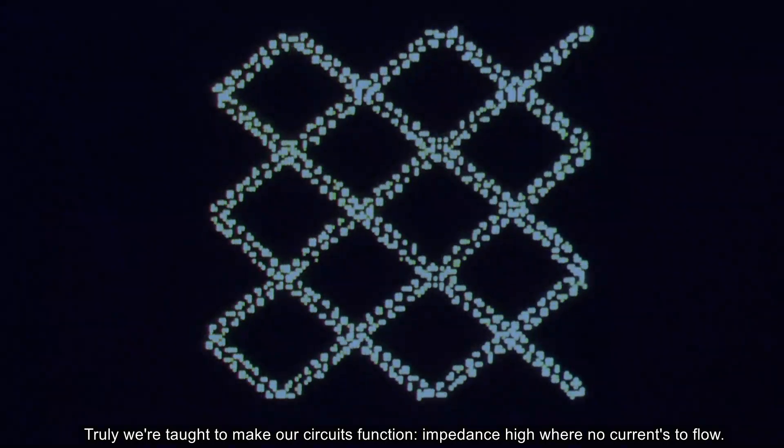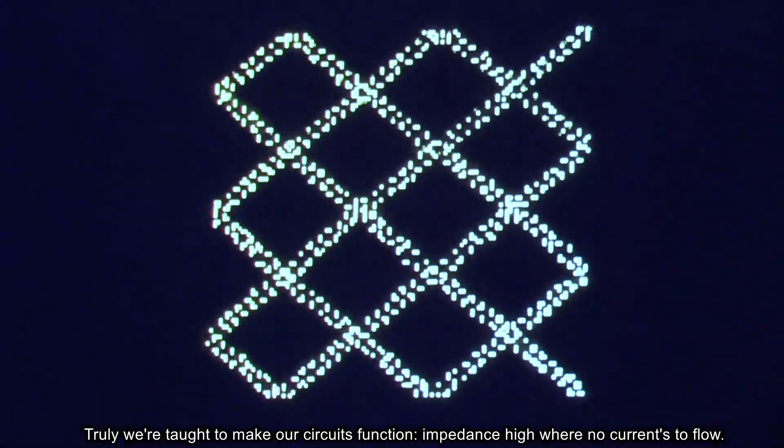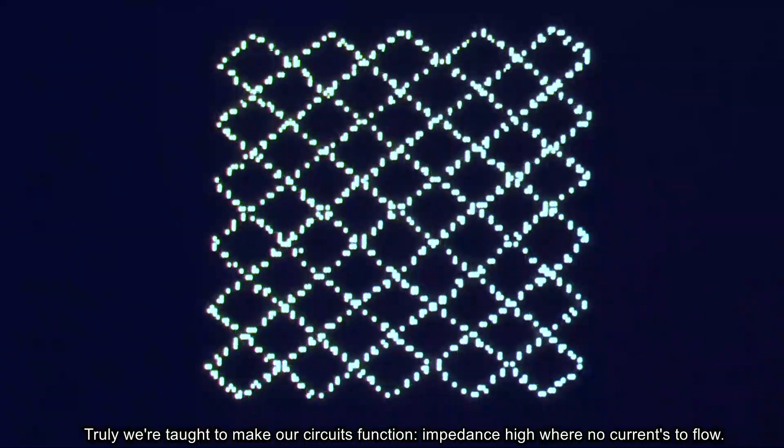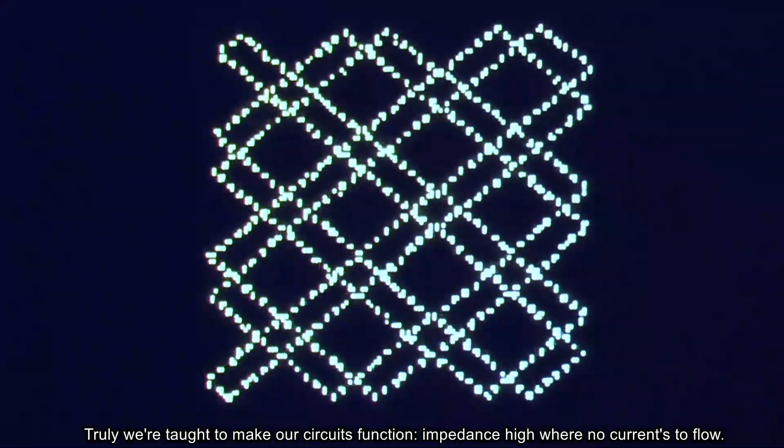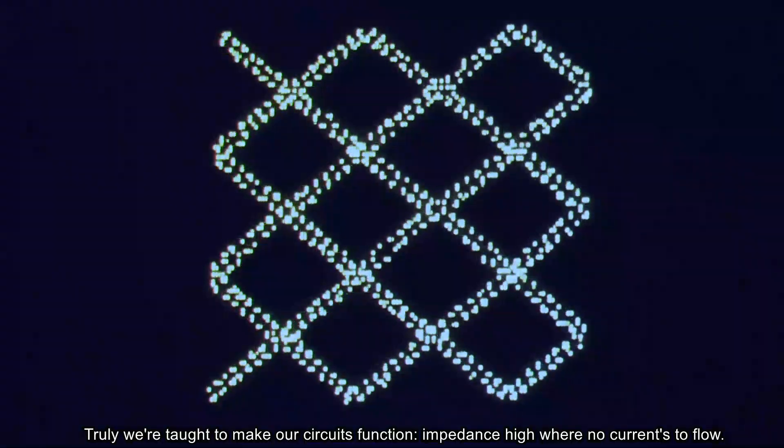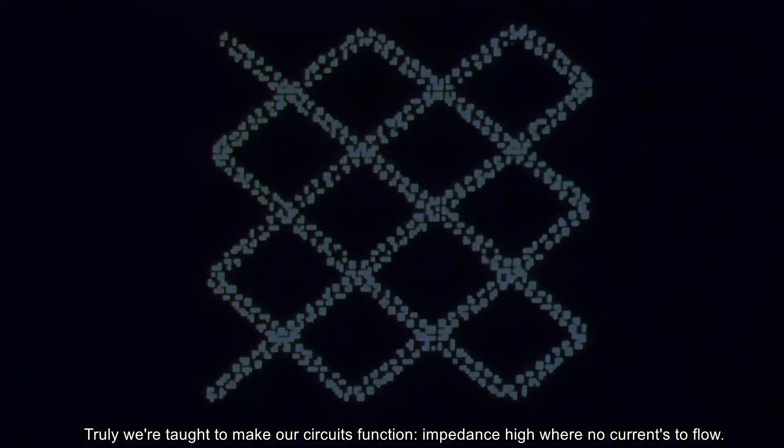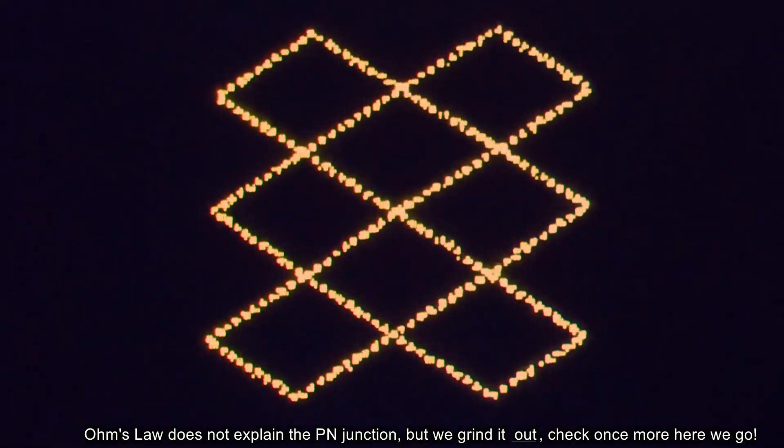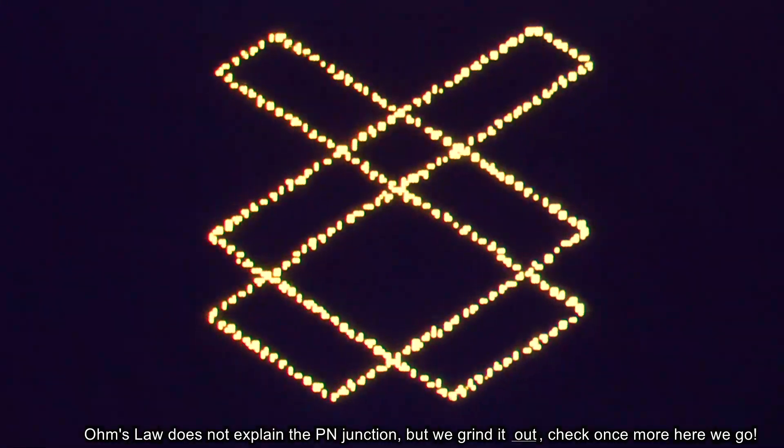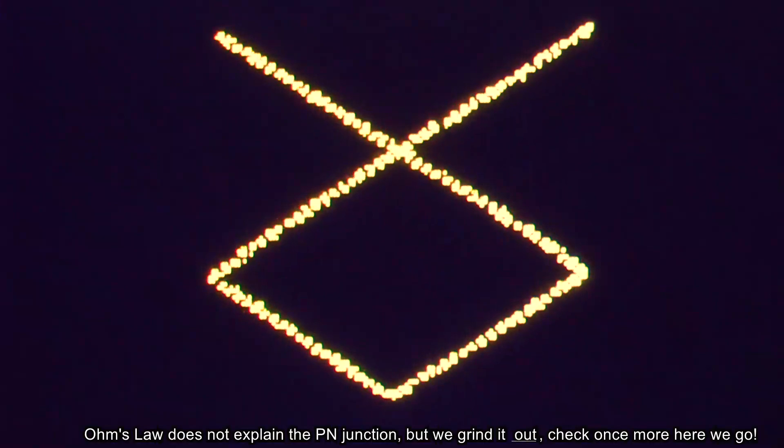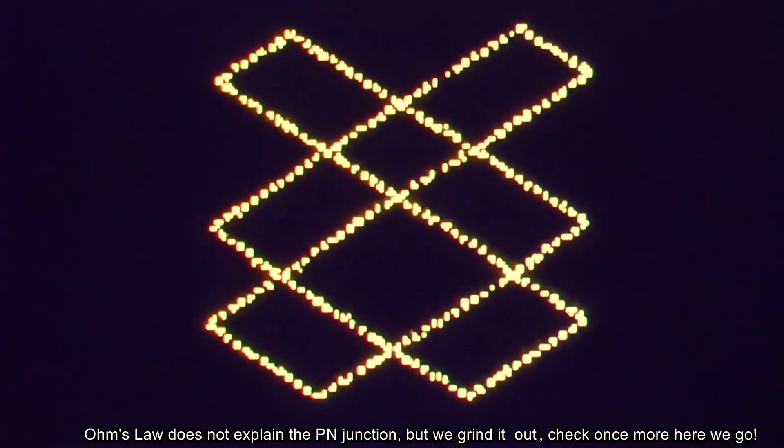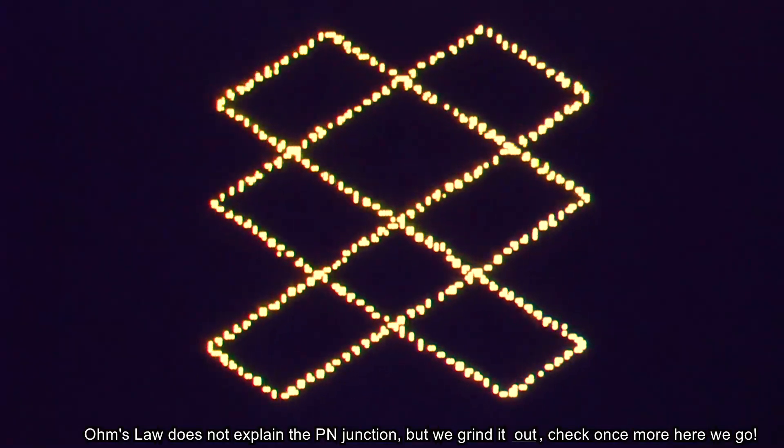Truly we're taught to make our circuits function, impedance high where no current's to flow. Ohm's law does not explain the PN junction. But we grind it out, check once more, here we go.